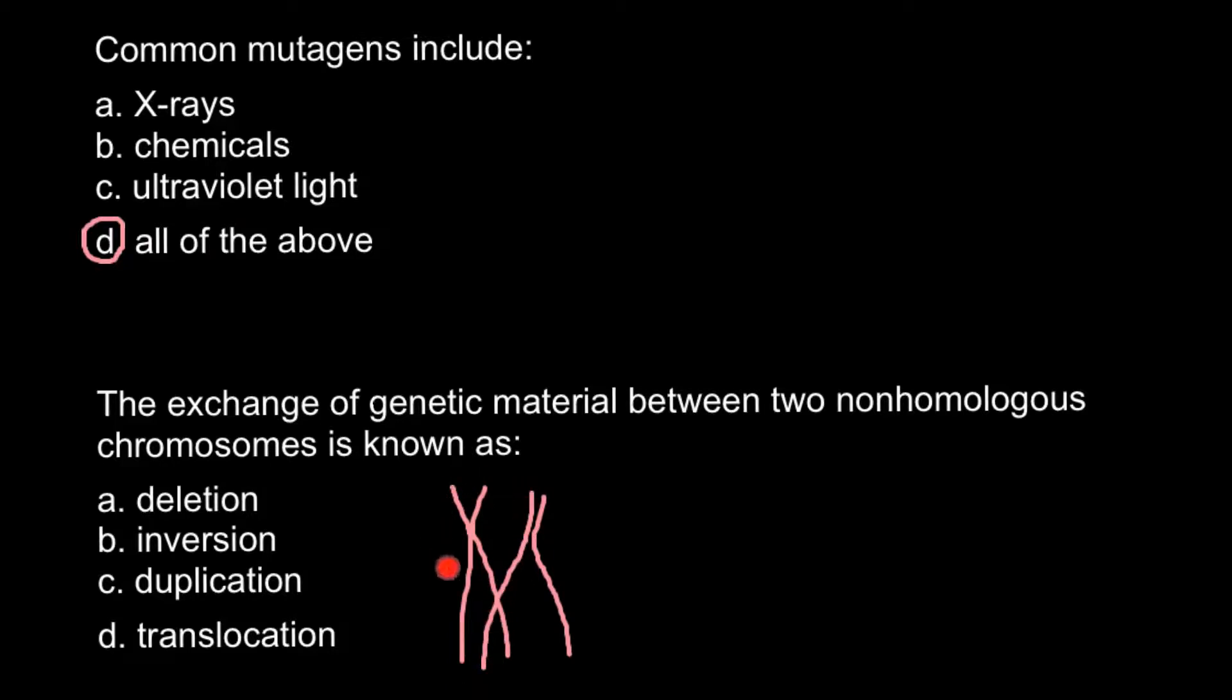That means that, for example, this is chromosome number one, and this also would be chromosome number one. But this would be from mother's side, and this would be from father's side. Now imagine that we have, for example, chromosome number two, which can be a different size. And here we also would have crossing over.